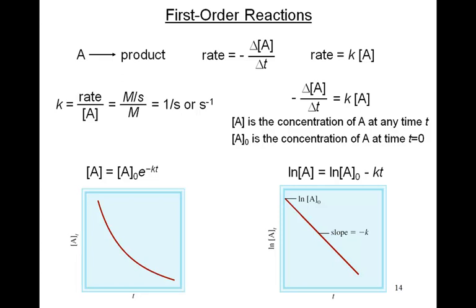What if we don't know the value of K? We simply take the slope of the line. If we take the slope, we get the value of negative K. So, plot the log of A versus T — if you get a straight line with a negative slope, you know it's first order and we can find the value of K.